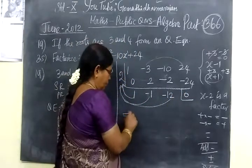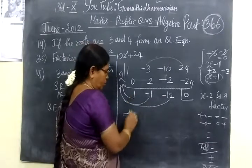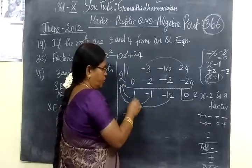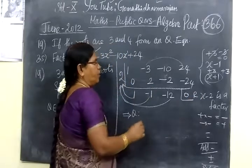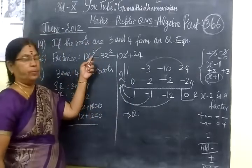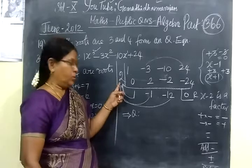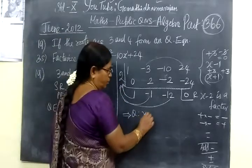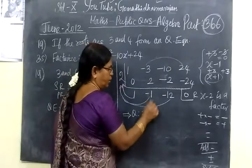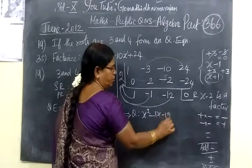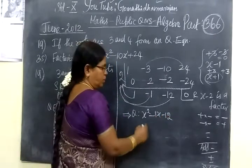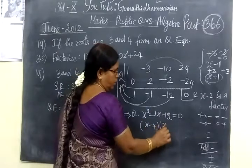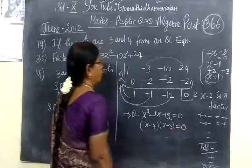It implies that we apply the quotient with the remainder is zero. We have x cube, then the quotient becomes x² minus 1x minus 12. We have the factorization: x² minus 1x minus 12 gives us x minus 4, then x plus 3. This is equal to 0.